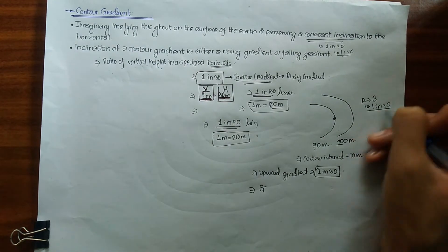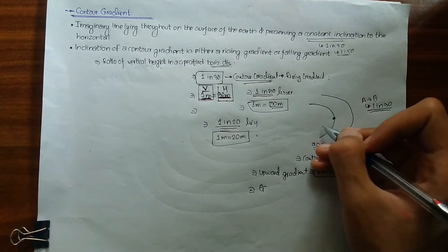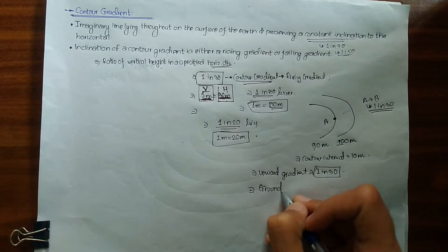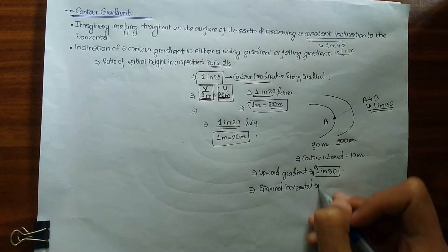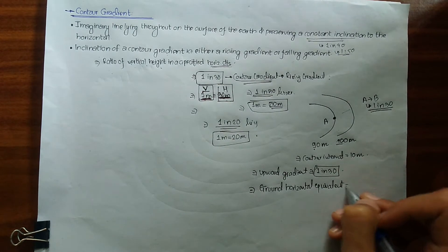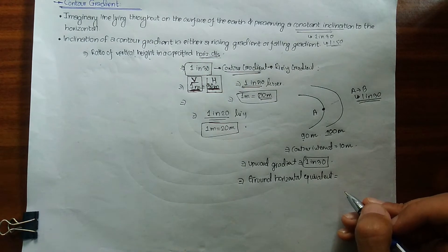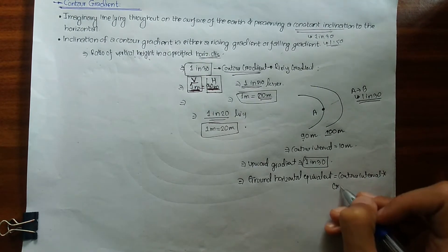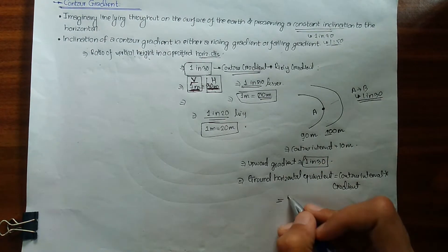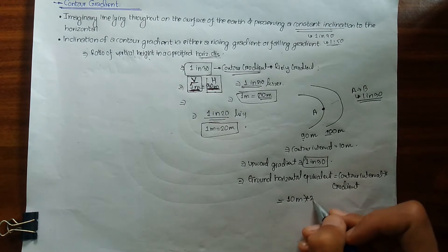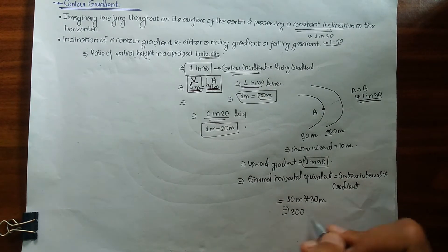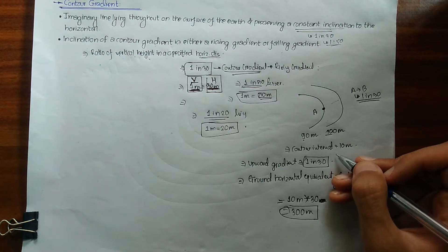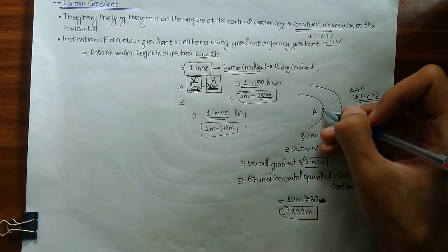Starting from point A, the length to point B is determined by the ground horizontal equivalent. The ground horizontal equivalent is simply equal to contour interval multiplied by the gradient value. My contour interval is 10 meters and my gradient denominator is 30, so 10 multiplied by 30 gives a ground horizontal equivalent of 300 meters.